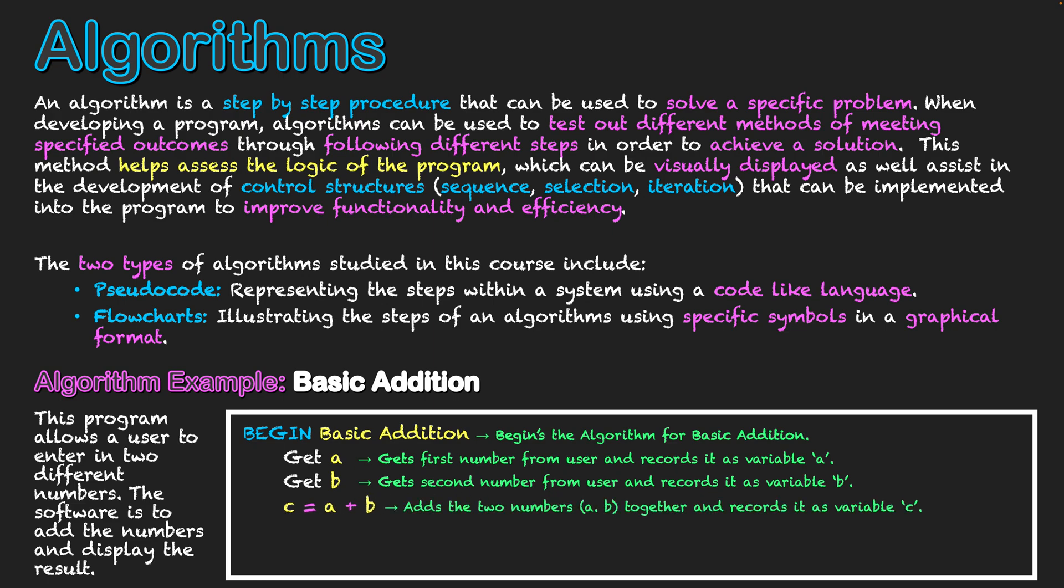What we've got to do next is have c, and c is going to be the addition of a plus b. It's going to add the two numbers together and record it under the variable of c. So c is the actual addition.